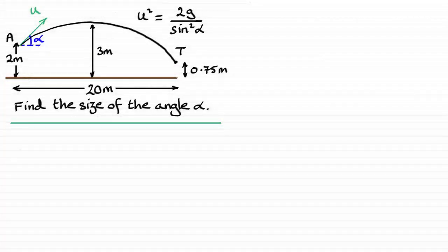For this next part of the question, I've added to the sketch point T. We're told the ball travels to point T, which is 20 meters horizontally from A and 0.75 meters above the ground, and we need to find the size of angle alpha. I've taken the equation from the first part: u² = 2g / sin²α. I won't be able to work out alpha from this equation alone because I don't know u at this stage.